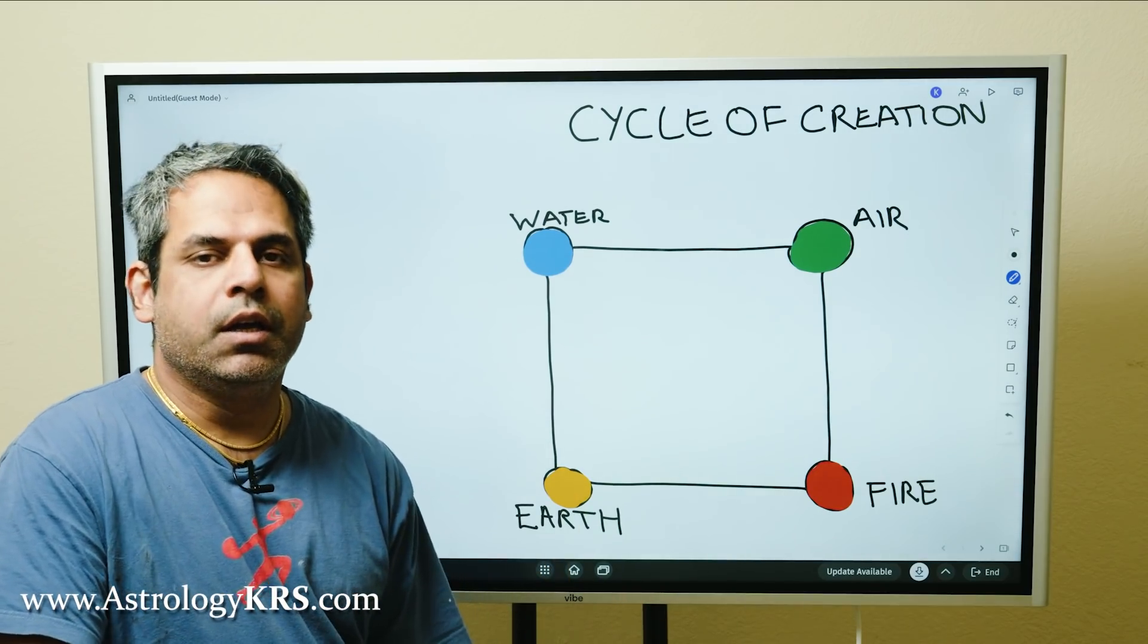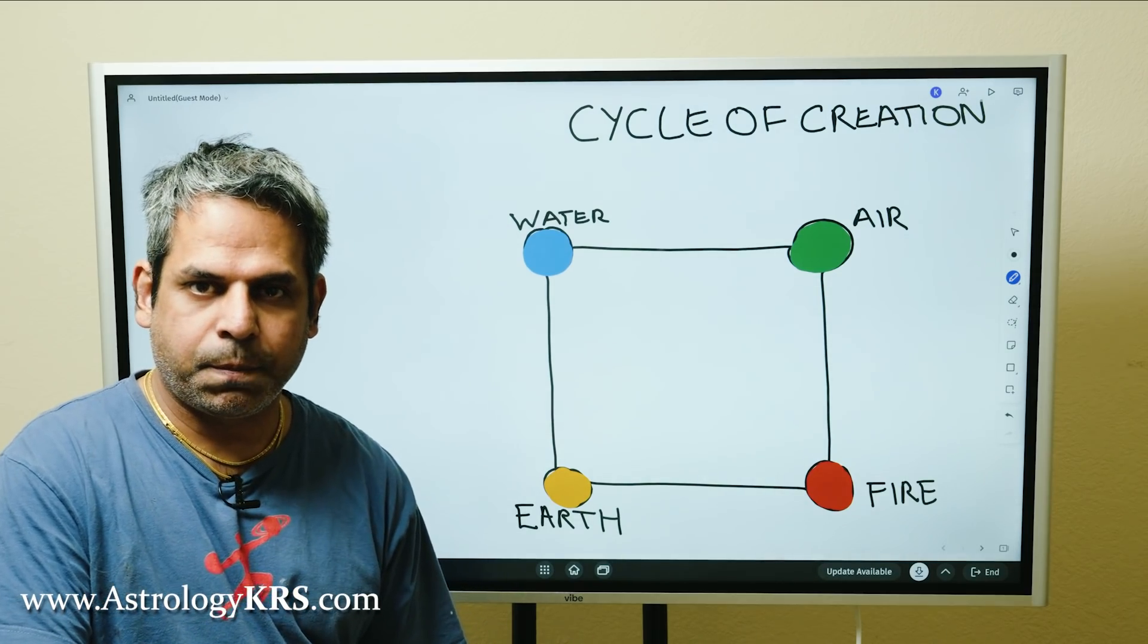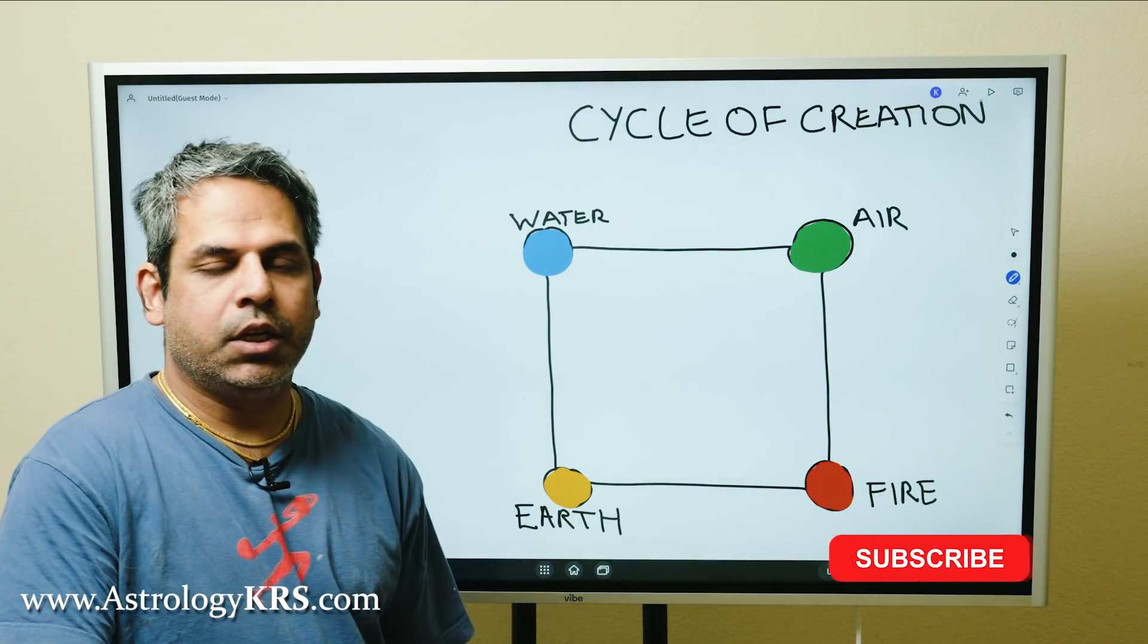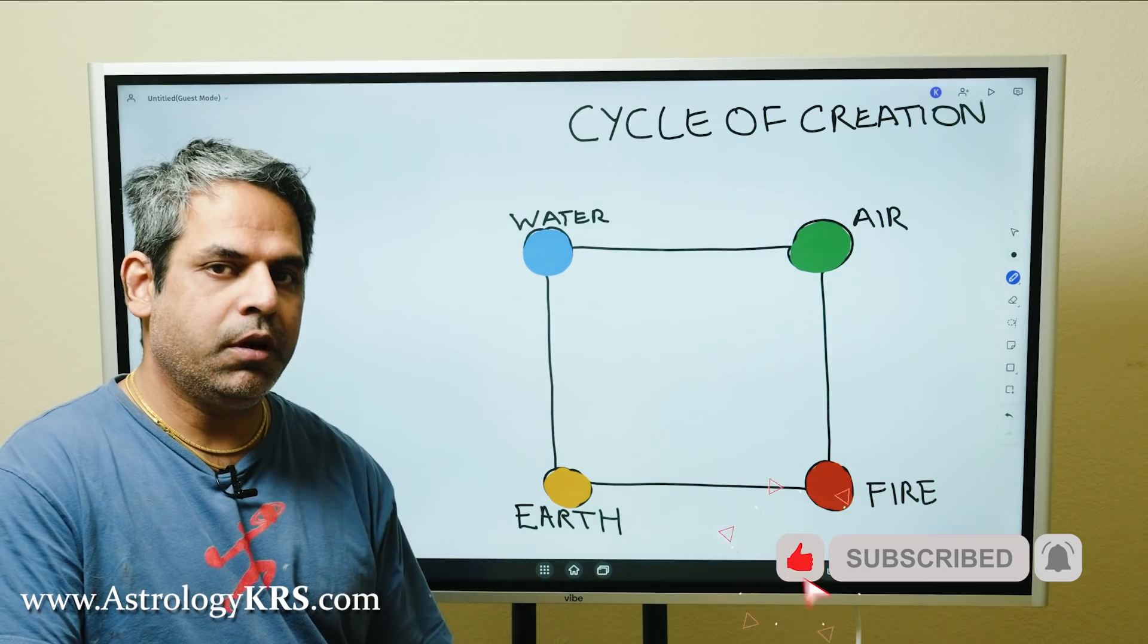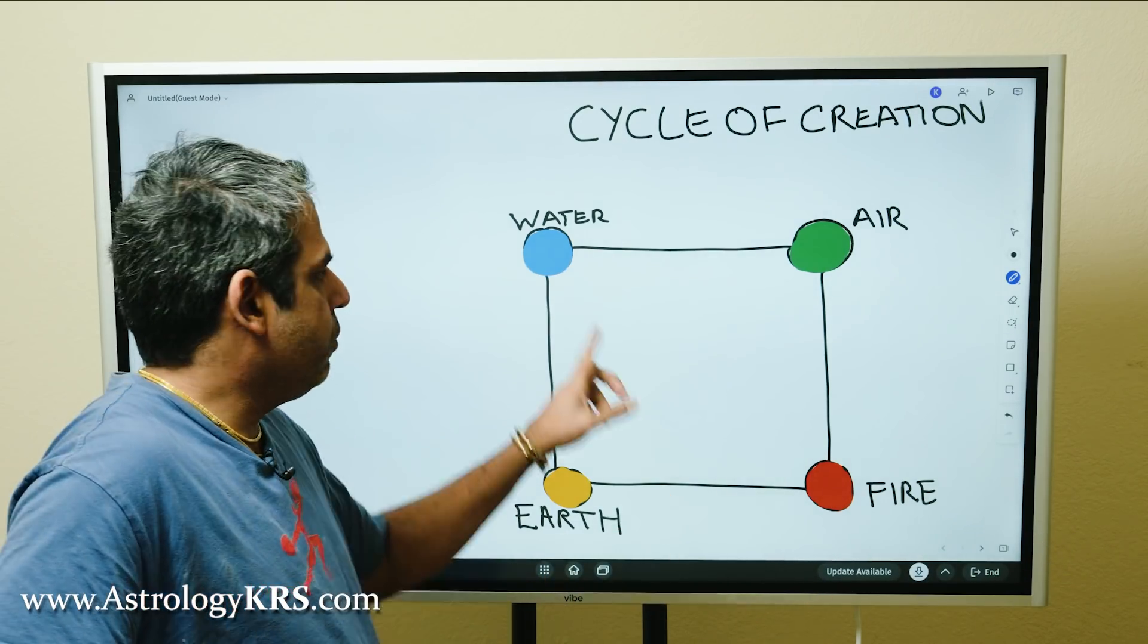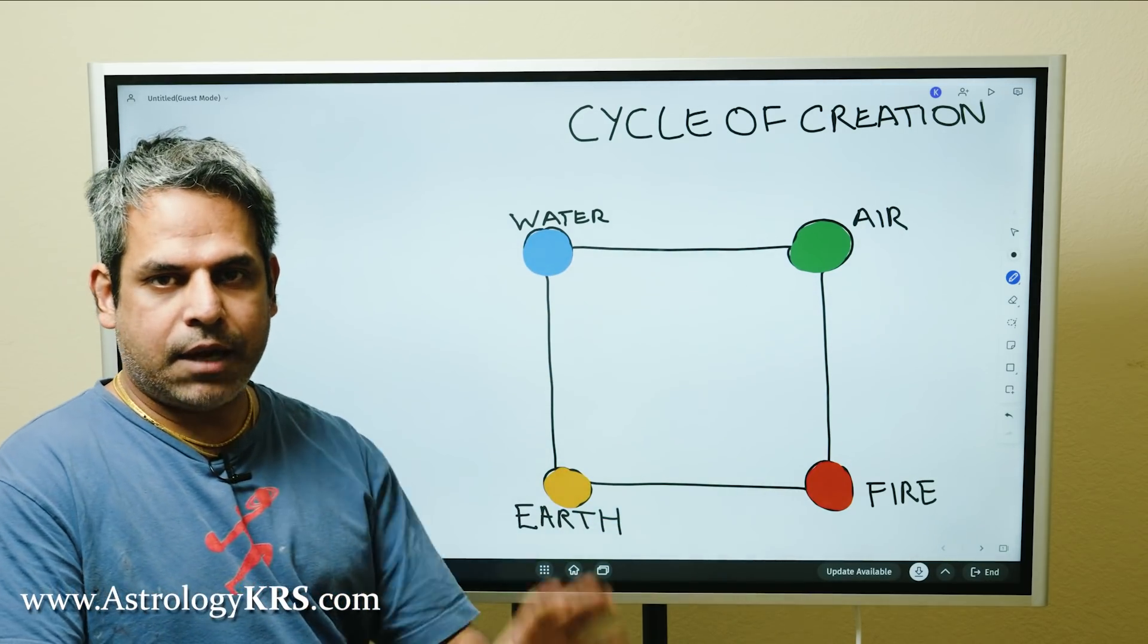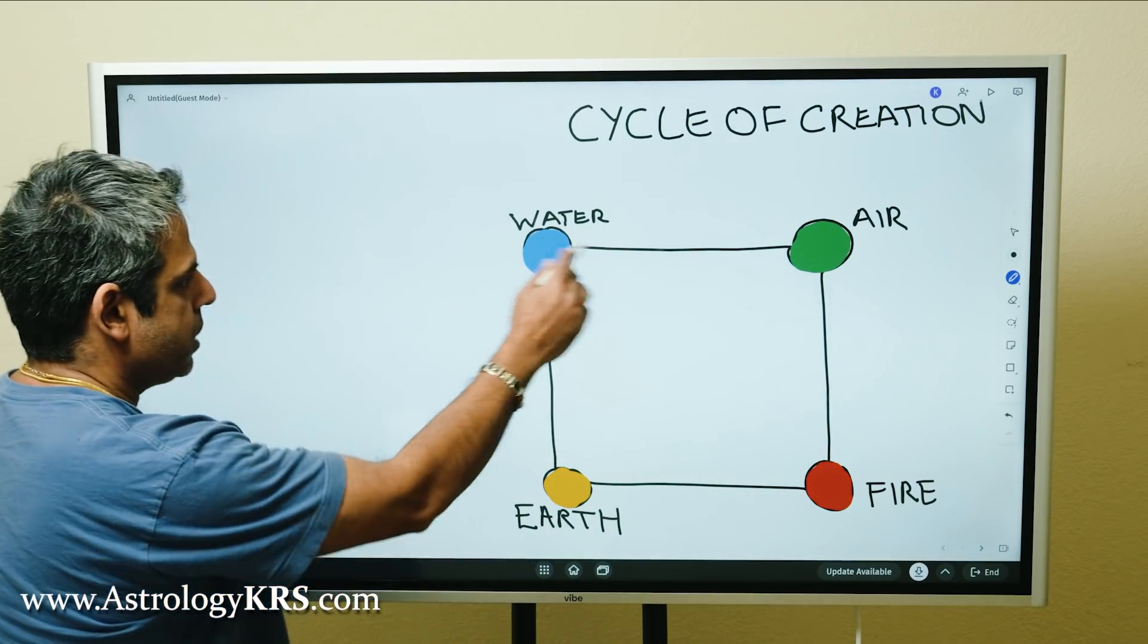In the cycle of creation there's a fifth element known as the sky ether, but when looking at a chart the only thing known as ether is Jupiter and Rahu - they're the controllers of the ether in the sky. So basically we mainly deal with these four elements in actual Vedic astrology.